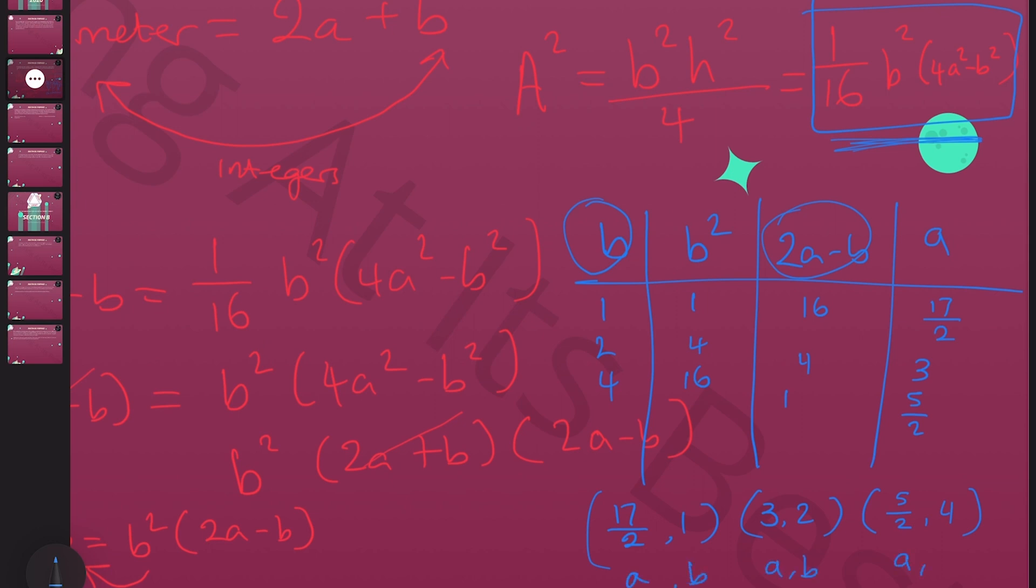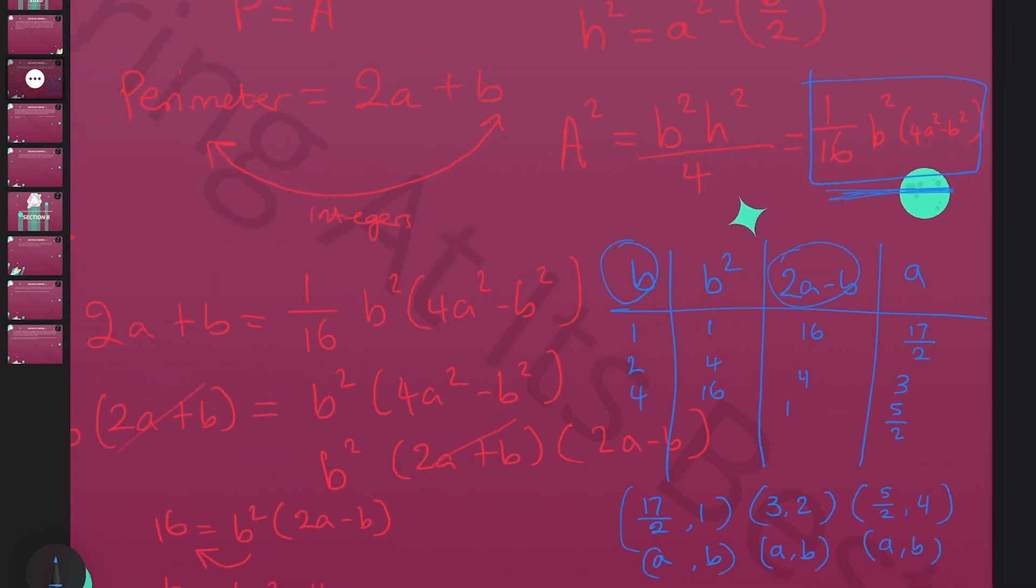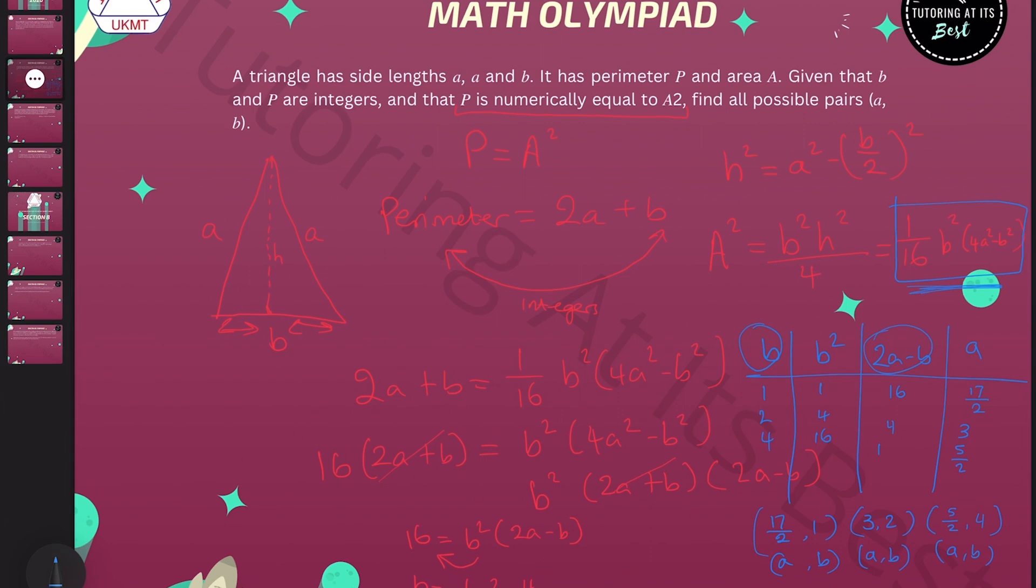Remember, you do need to check that these pairs give us genuine triangles. I hope this method was clear, but there is also another method that we can use, and that's Heron's formula.